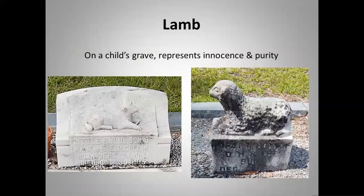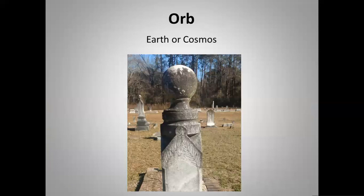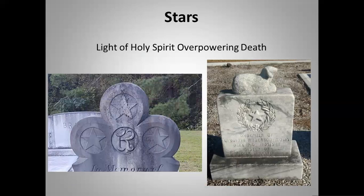A lamb on a child's grave represents innocence and purity, symbolic of the Lamb of God. An orb — a round ball symbol on top — can mean the earth or cosmos. Stars on headstones mean light of the Holy Spirit, overpowering death. On the right is a child's grave with a lamb on top but also a star, representative of the child's spirit overpowering death. When you have three stars, that person usually led a full life.